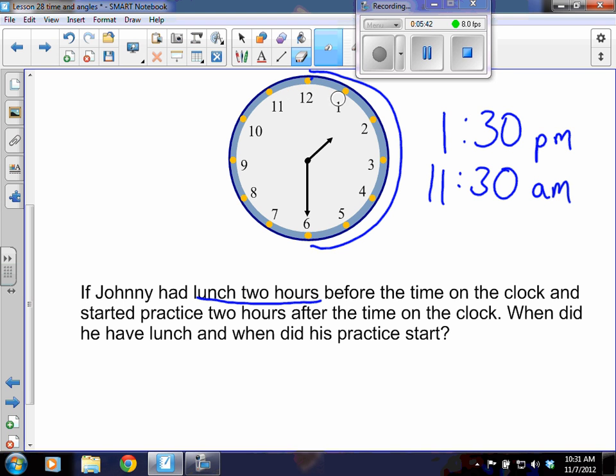All right? So then, as we look for our second idea, it says, when does his practice start? We know it's two hours after. And so if we're starting here, we're going to go one hour, two hours. And so our arrow would be pointing here, which would mean that at 3:30 PM, Johnny is starting his practice. So we have that idea.